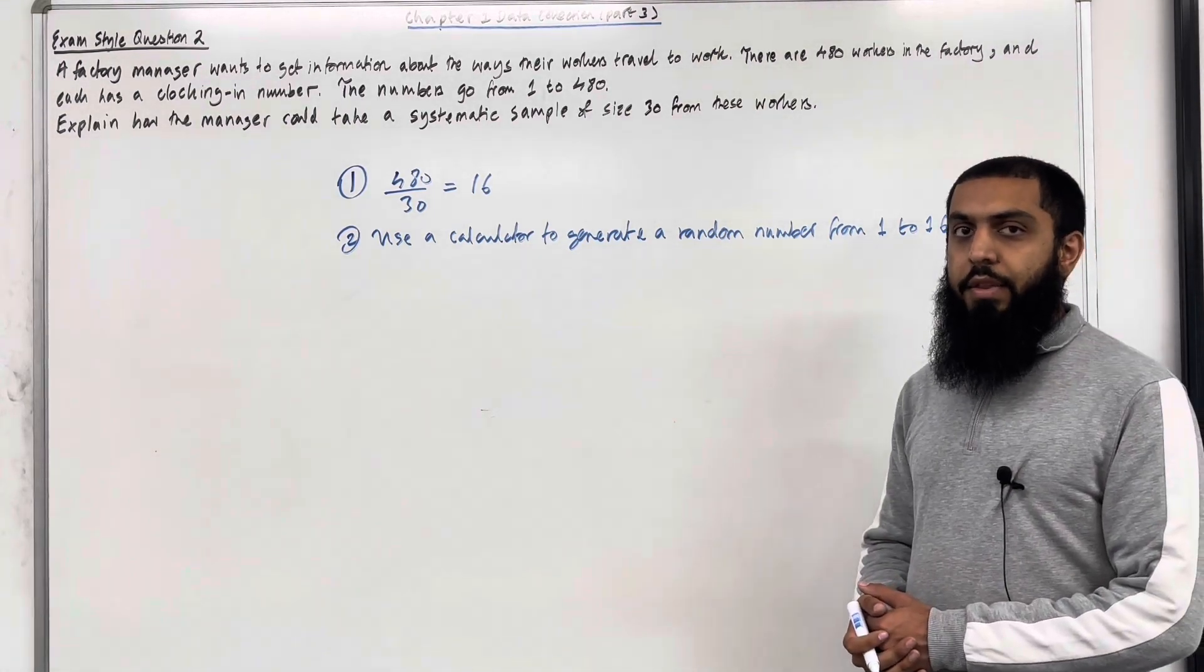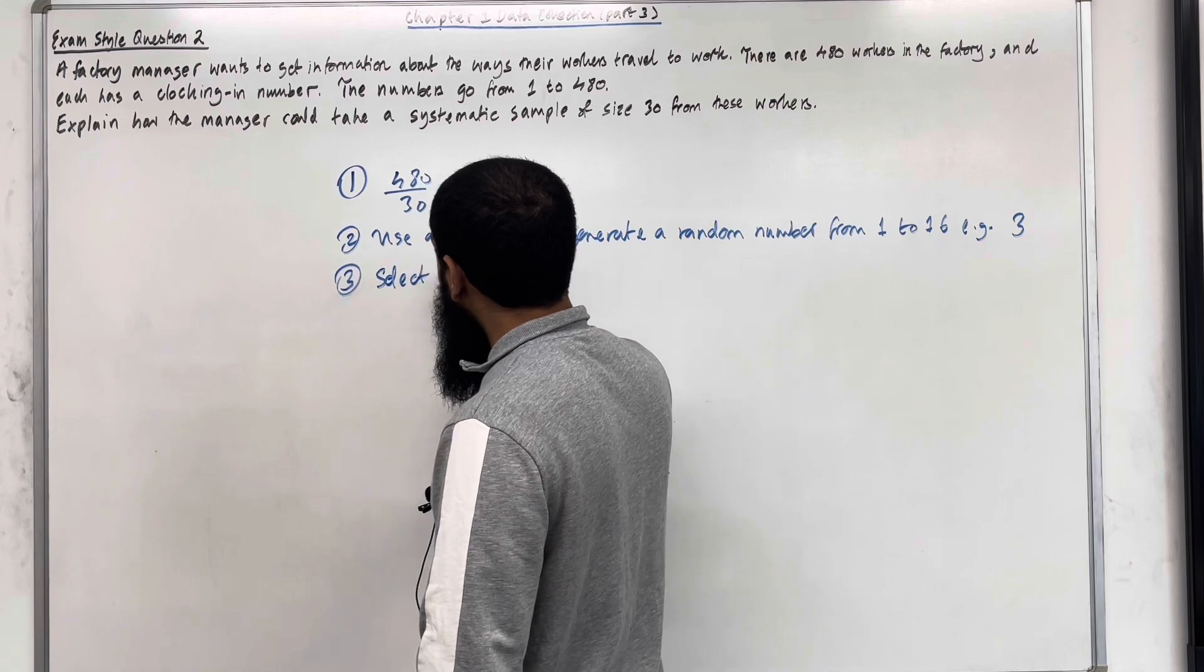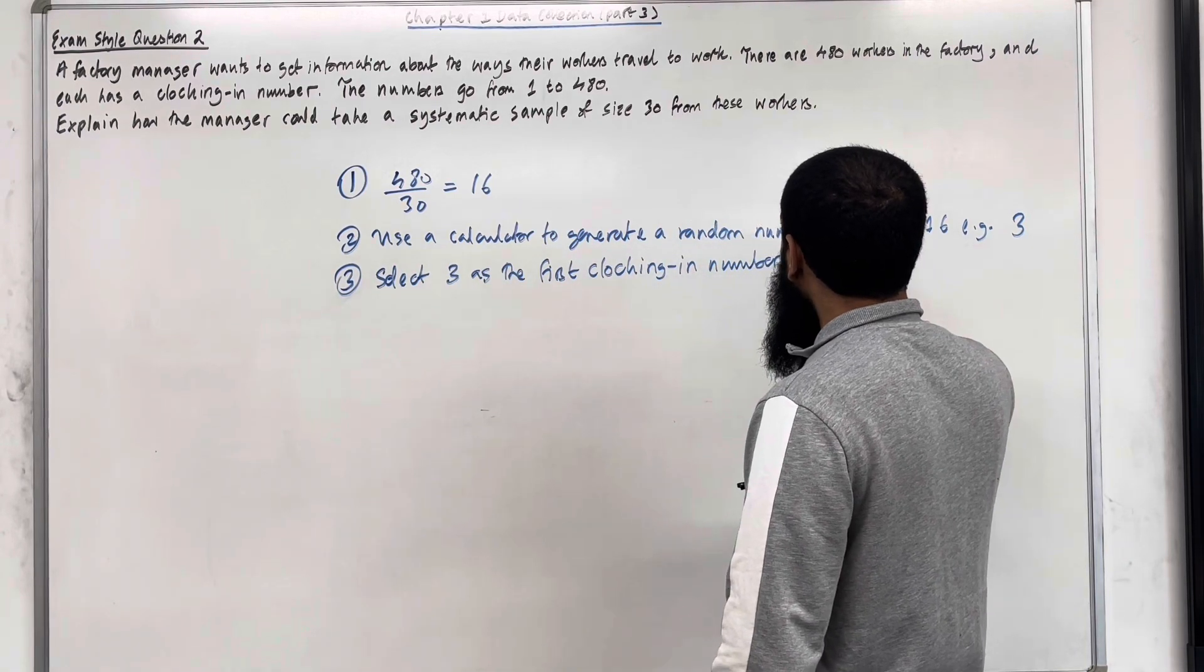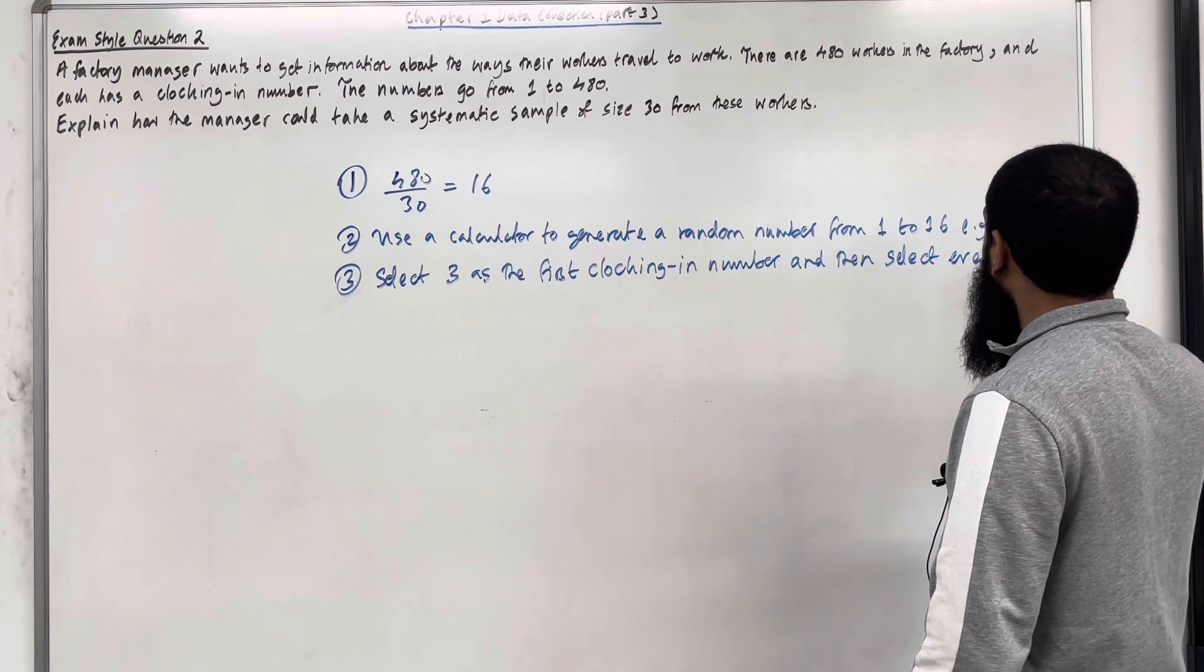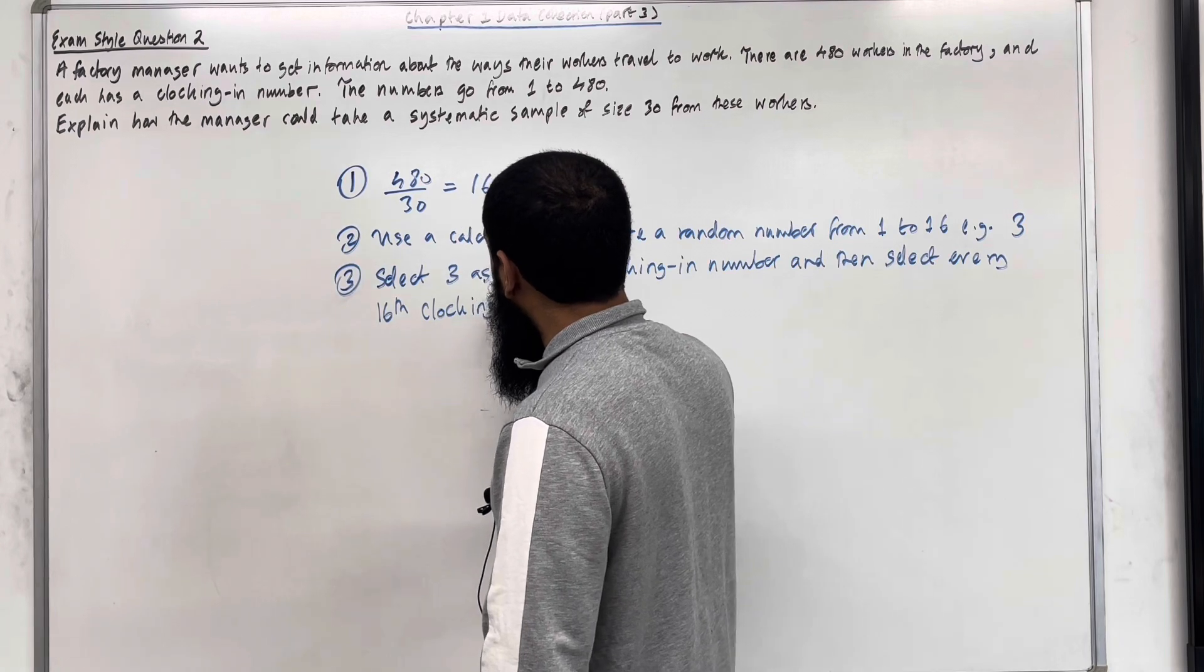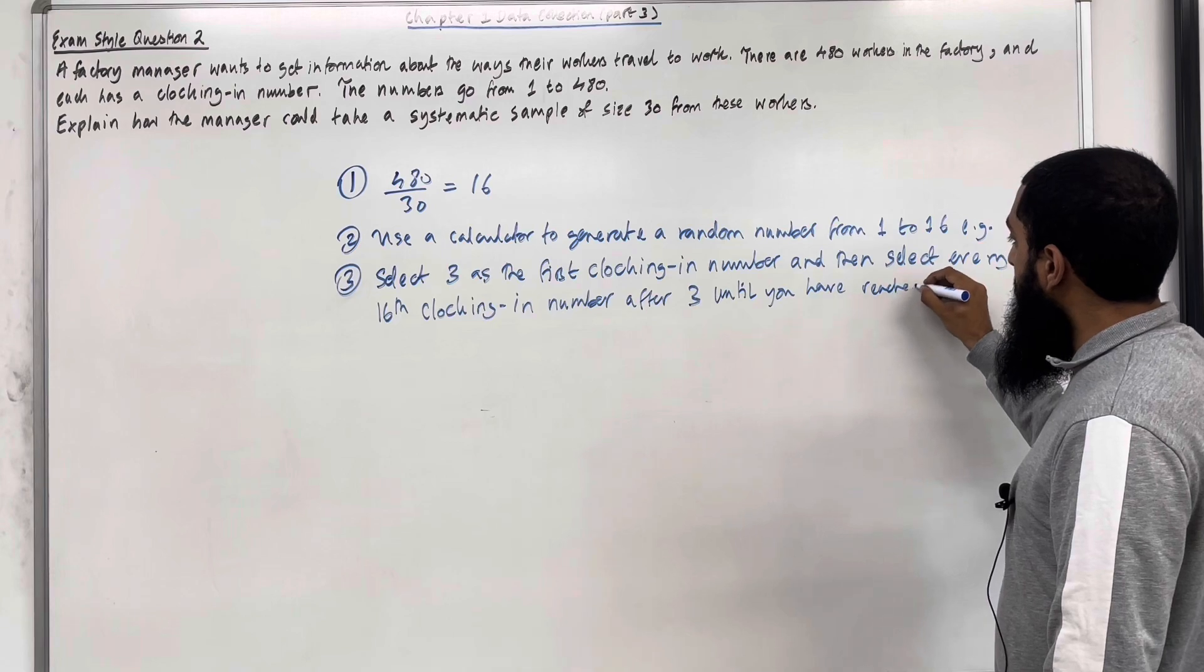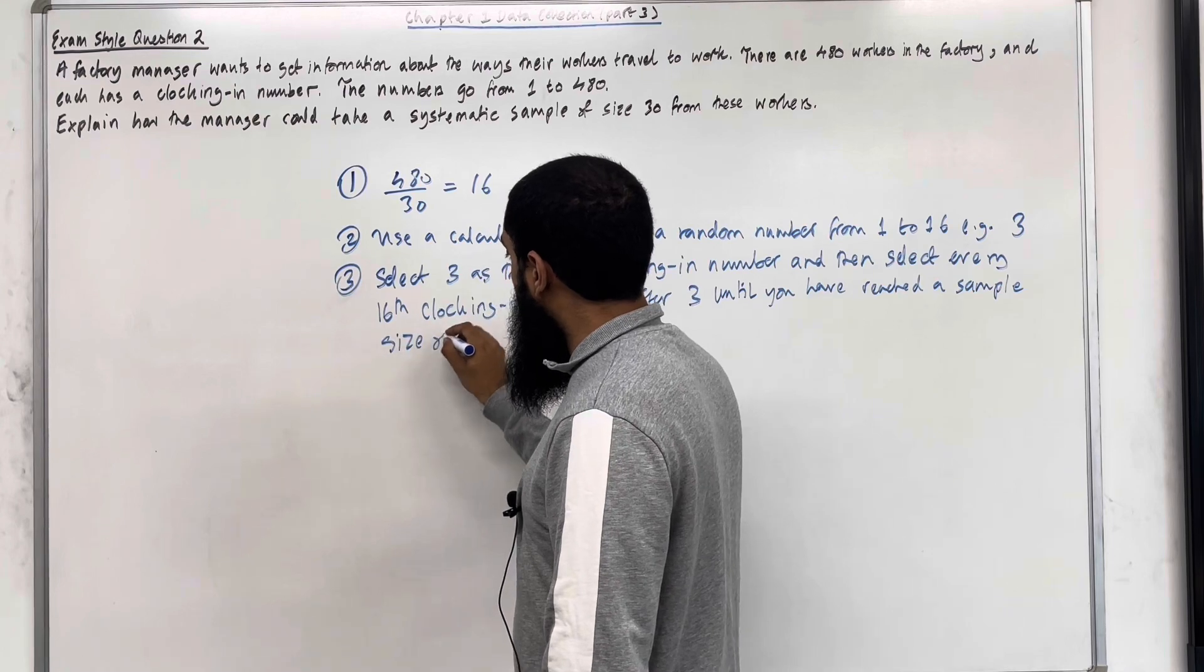Moving on to step number 3: Select 3 as the first clocking in number. And then select every 16th clocking in number after 3 until you have reached a sample size of 30.